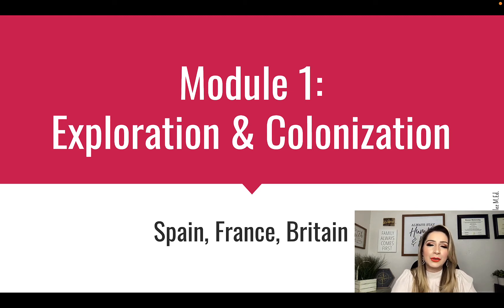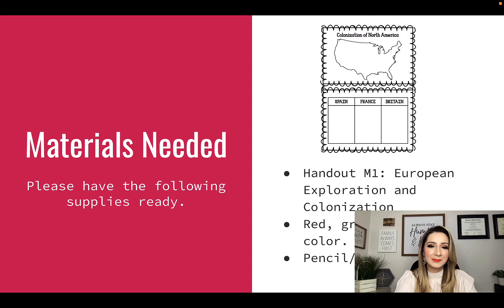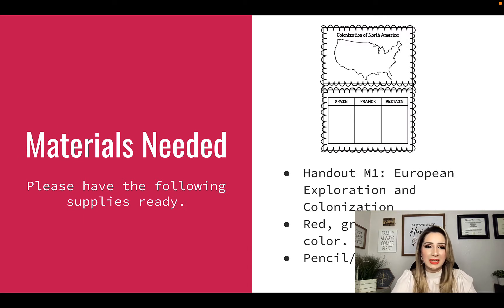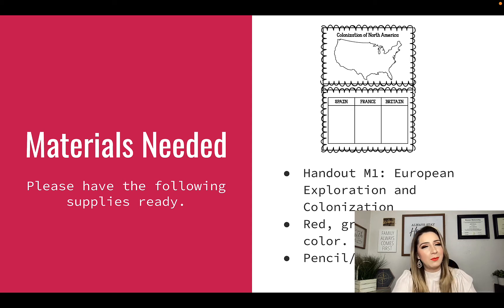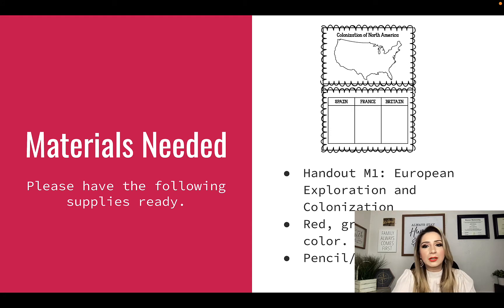We'll be going over the three European countries that colonized North America. This includes Spain, France, and Britain. Every module will include supplies or resources that you will need to complete that module. So for today, you need Handout M1, which is Module 1, European Exploration and Colonization, and you'll also need a red, green, and orange color crayon, marker, colored pencil, or even highlighter.